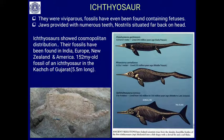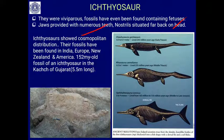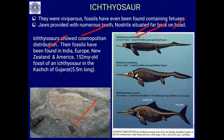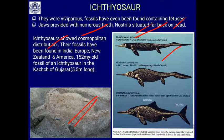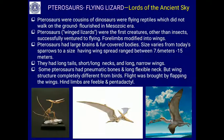Ichthyosaurs were viviparous — giving birth to live young — which is unusual for reptiles. Fossils have been found containing fetuses. Their jaws were provided with numerous teeth, and nostrils were situated far back, similar to whales. Ichthyosaurs showed cosmopolitan distribution; fossils have been found on every continent, including one fossil recovered in Gujarat, India, measuring about 5.5 meters in length. Early Triassic forms were fish-like; later Jurassic and Cretaceous forms were more whale-like.